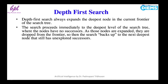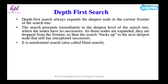The search proceeds immediately to the deepest level of the search tree where the nodes have no successors. As those nodes are expanded, they are dropped from the frontier so that the search backs up to the next deepest node that still has unexplored successors. It is also called a blind search algorithm.